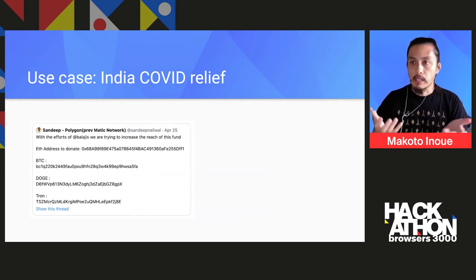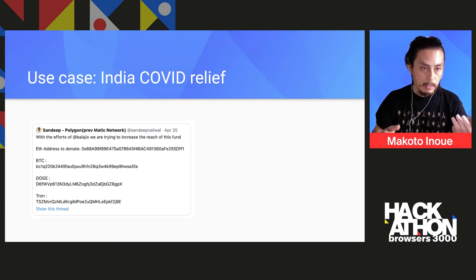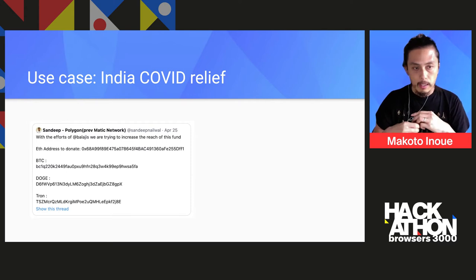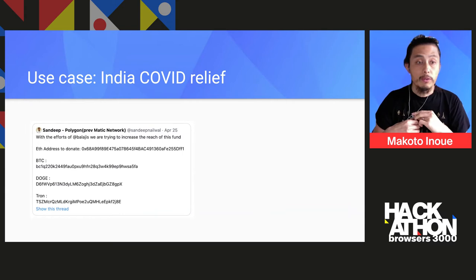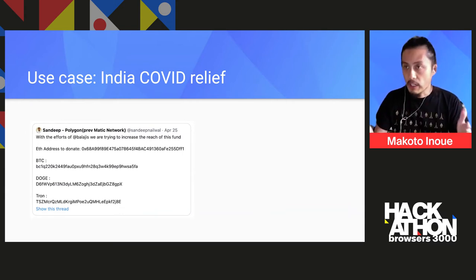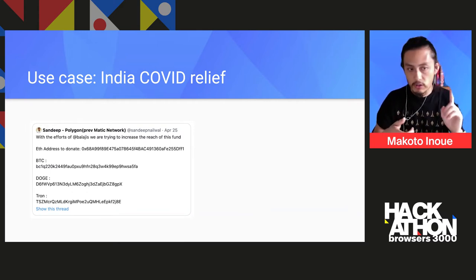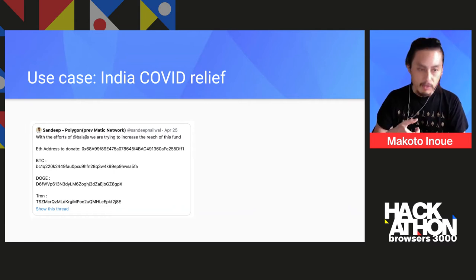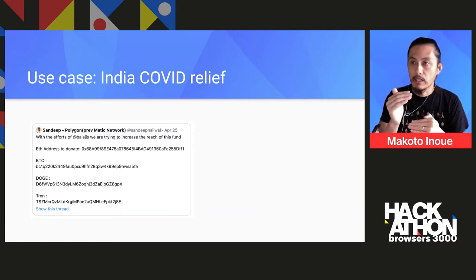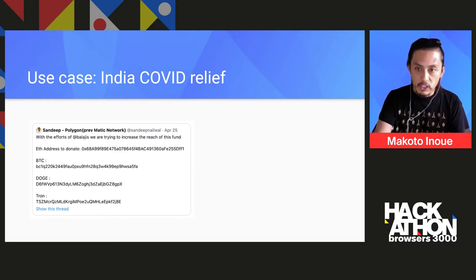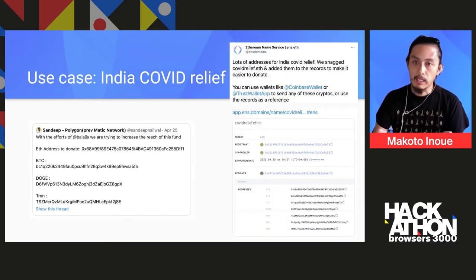About three or four months ago there was a second COVID outbreak in India, and a guy — Sandy, who is a founder of Polygon, one of the side chains of Ethereum — basically asked for donations. To reach as many different audiences as possible, he put like an Ethereum address, a BTC address, a Doge address, a Tron address — and it didn't actually even fit into the tweet. So what we reached out and did together was set up an ENS name called covidrelief.eth, where we put all those different addresses — ETH, BTC, LTC, Doge.